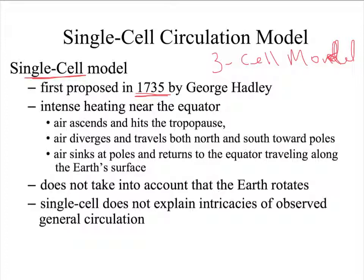And we end up, or I should say, one of the things that Hadley did not take into account is the fact that the Earth spins on its axis of rotation. And so we end up with three cells instead of one cell because of that. And we'll talk more about that.